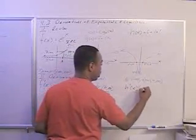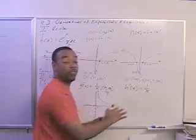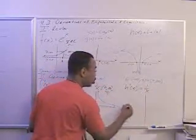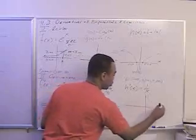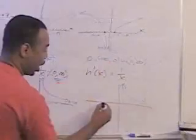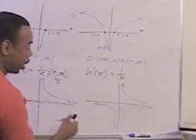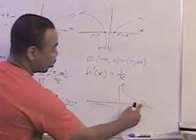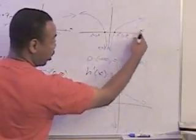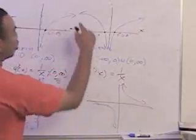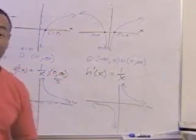So when you want the derivative of natural log of absolute value of x, it'll be 1 over x with no restrictions. So you'll get to use the right side and the left side. This represents the slopes of this curve right here. And this guy represents the slopes of this curve right there.